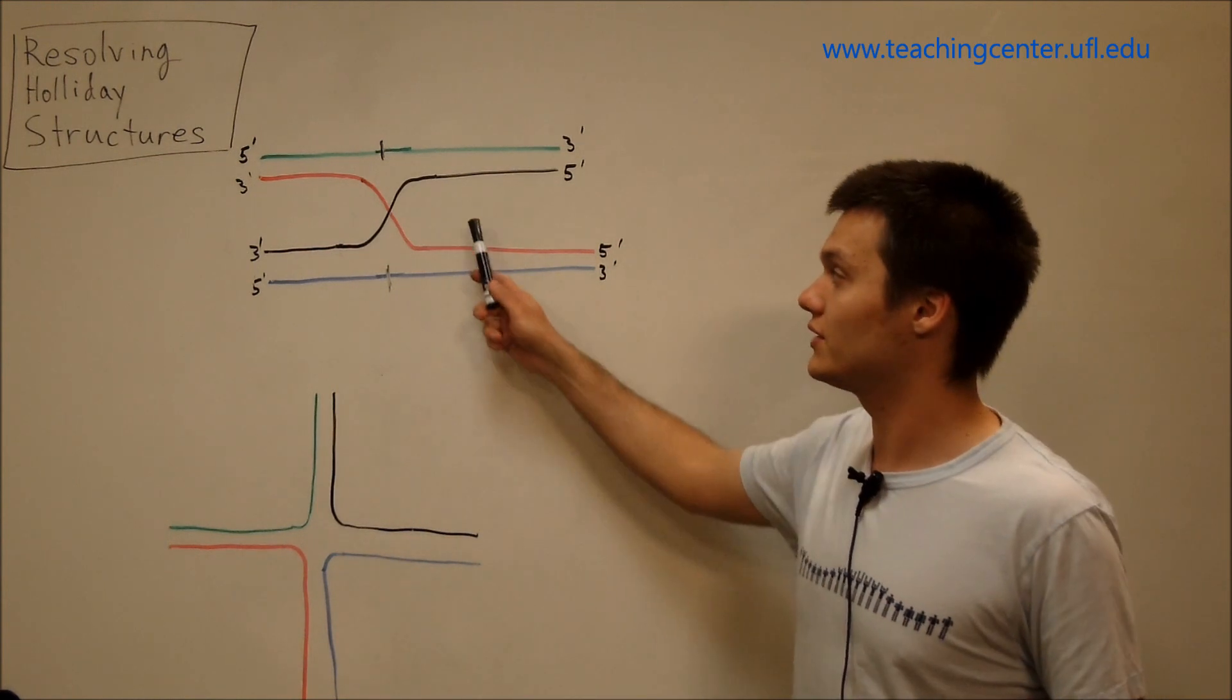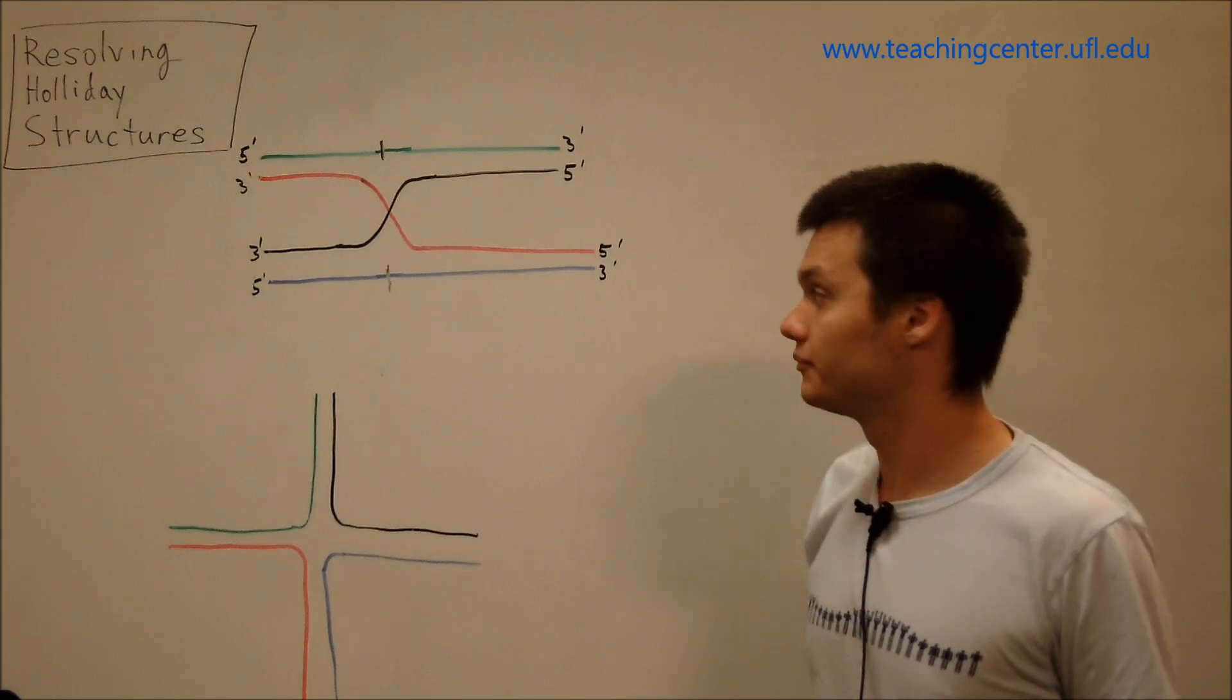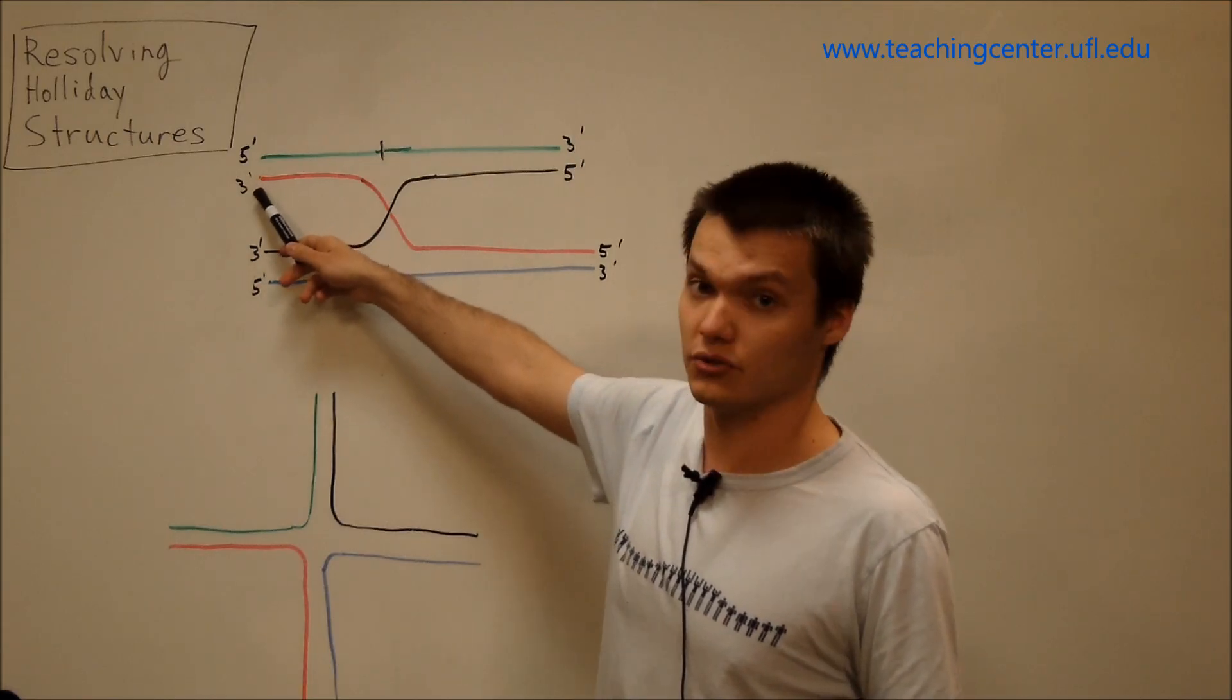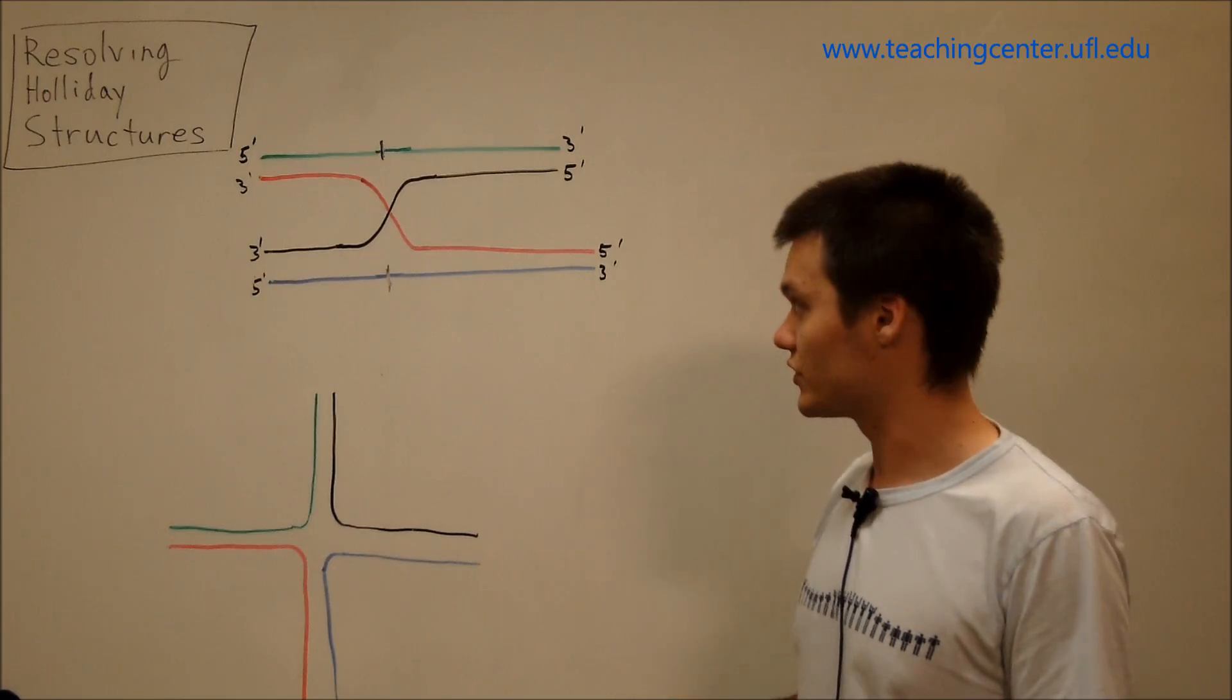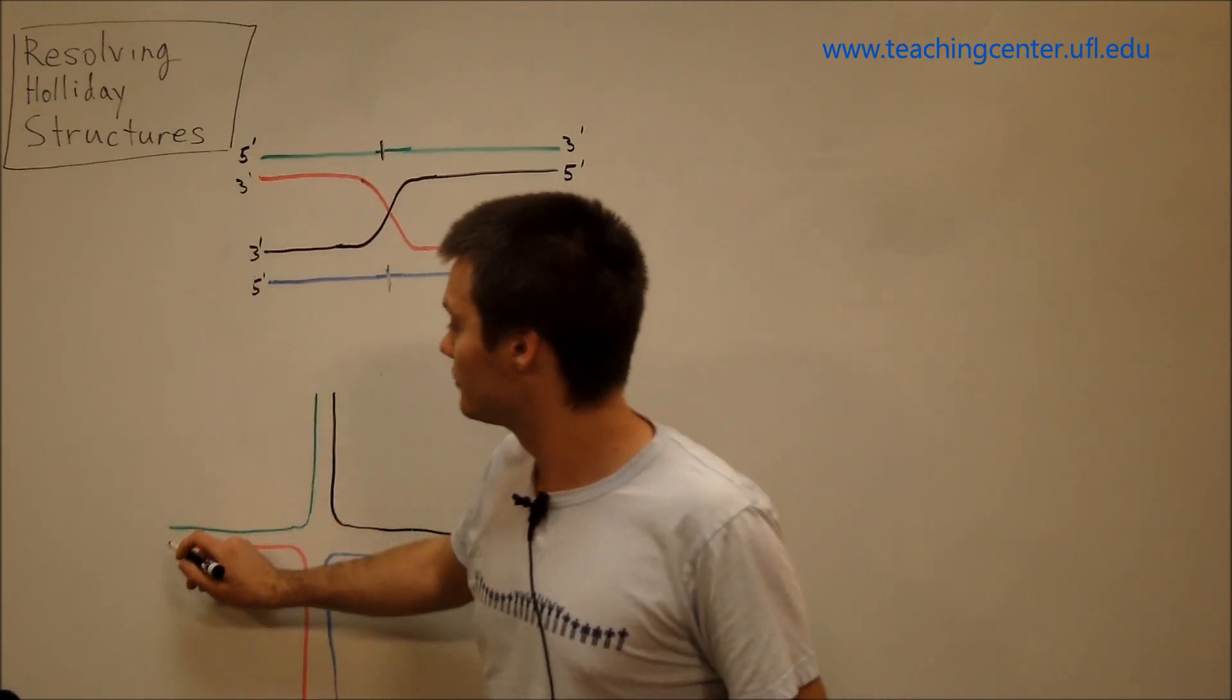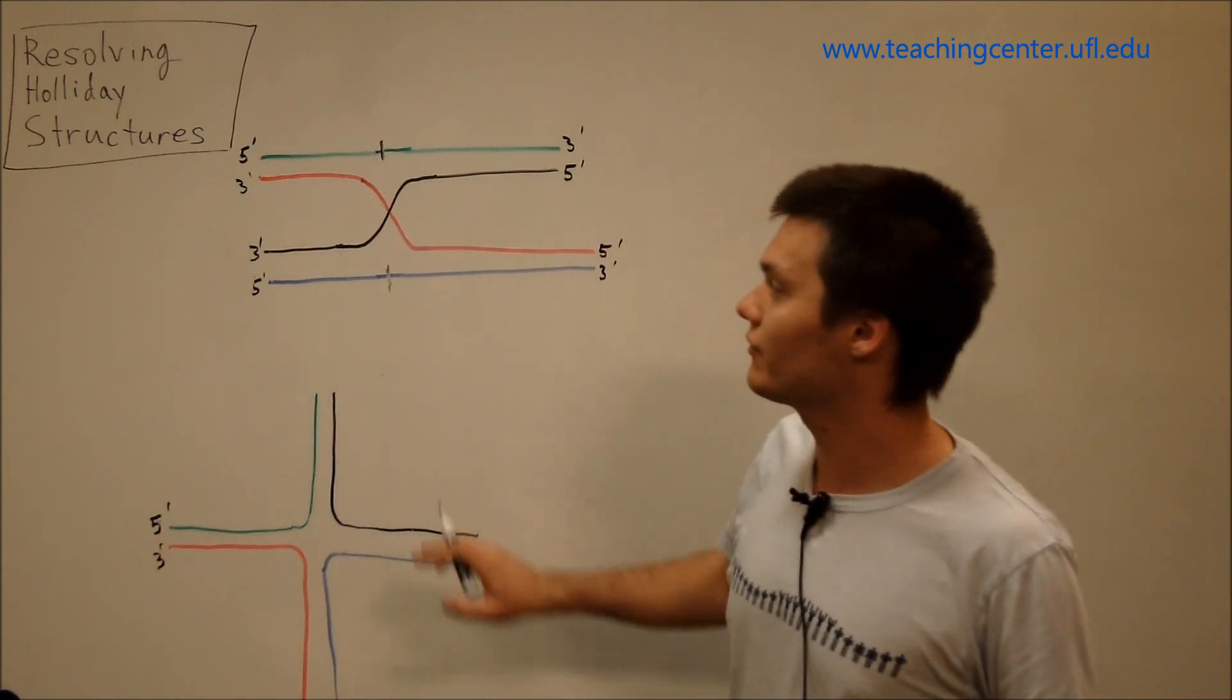First, how do we know that this is essentially exactly this? Well, let's take a look at the base pairing. Our five prime end of our green strand is next to our three prime end of our red strand. So let's draw that. Five prime end, green. Three prime end, red. So five prime and three prime. So we have that.